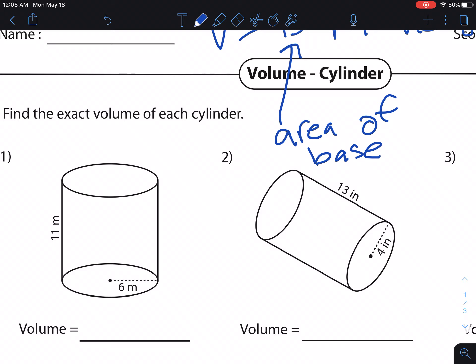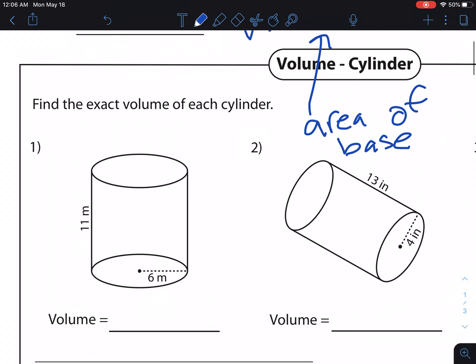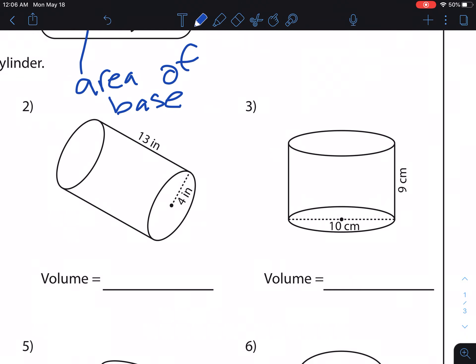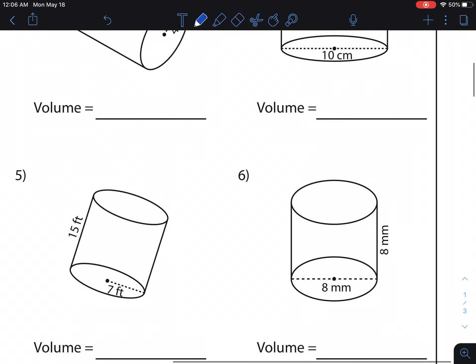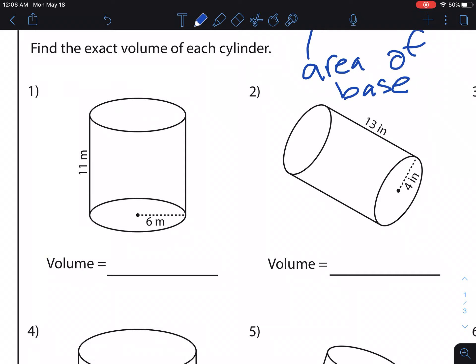Now, for these, this worksheet says find the exact volume. That means to leave your answer in terms of pi. I'm going to talk about that. And I'm going to kind of go over both ways of doing this. Let's see here. I think I'm going to go ahead and, which one should we do? Yeah, let's, we can just do this first one right here. So, the first thing we're going to do for this volume is we're going to find the area of the circle. And, hopefully, you remember that the area of a circle is found by pi times the radius squared.